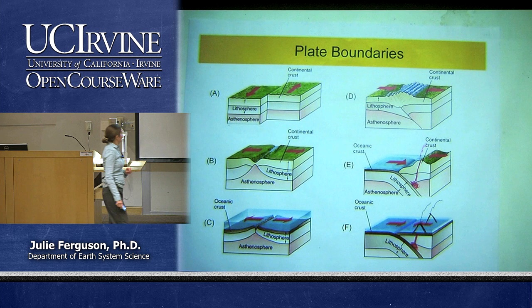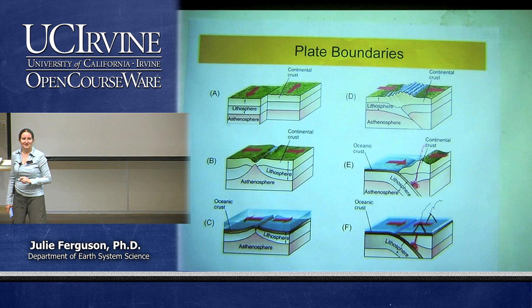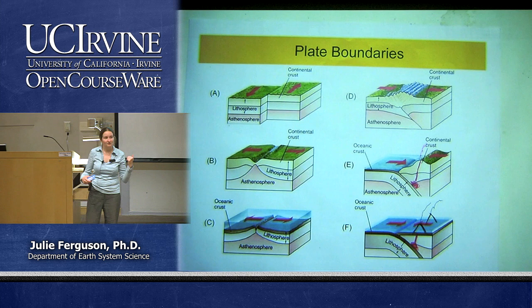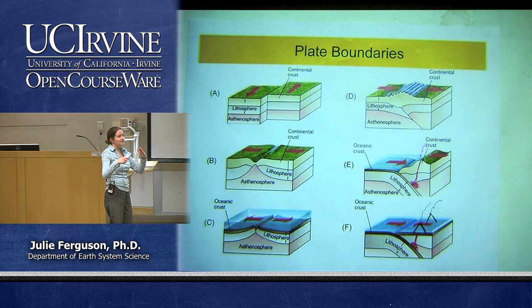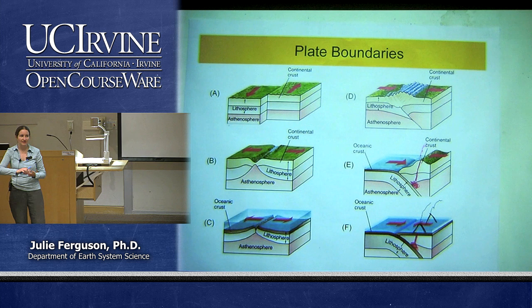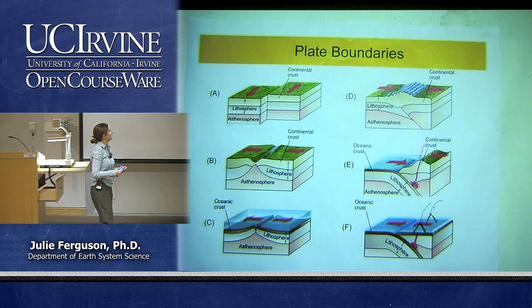Boundary C is divergent with oceanic crust — essentially the same as B but underwater, giving us a mid-ocean ridge with a small valley in the center. We get volcanic activity here, including hydrothermal vents that line up along this type of ridge, and also shallow earthquakes close to the surface.